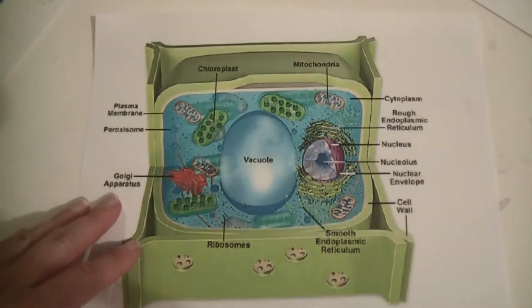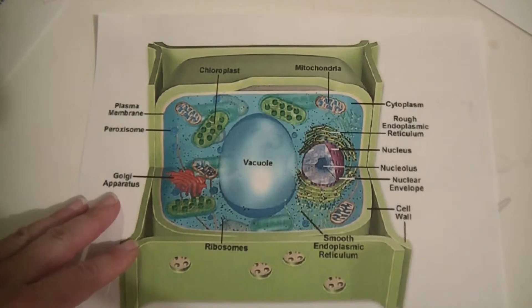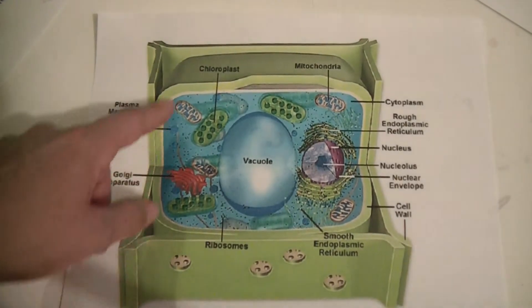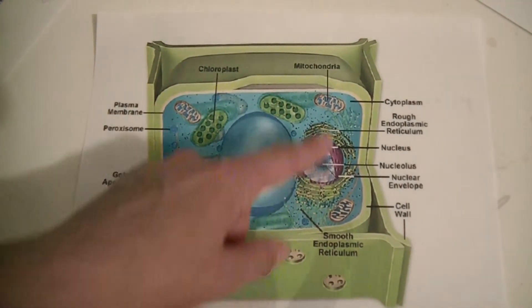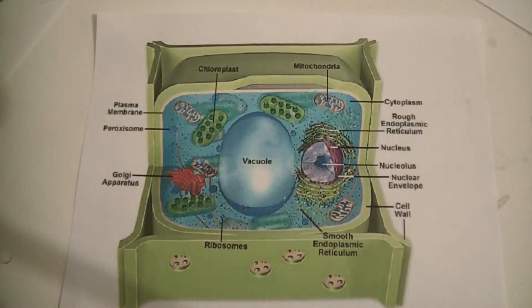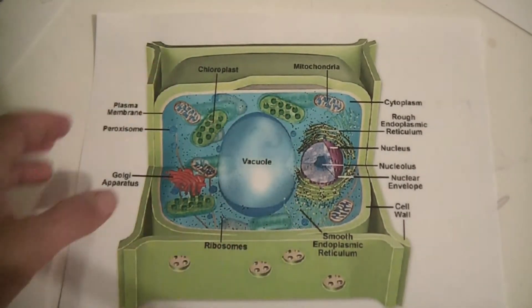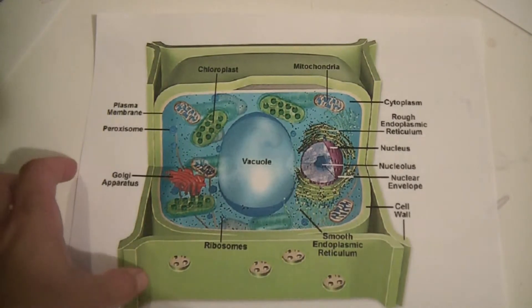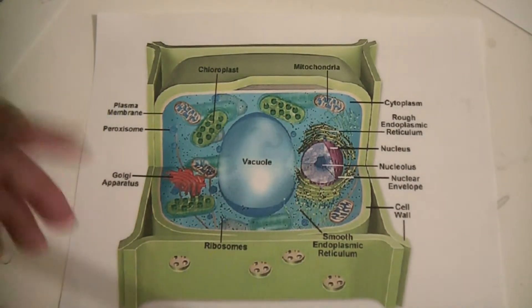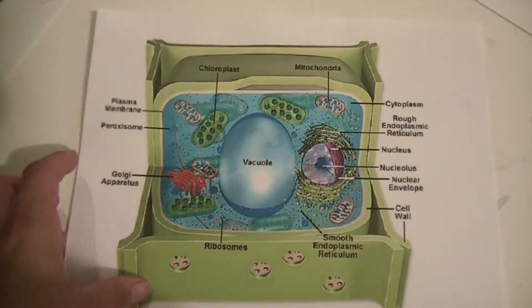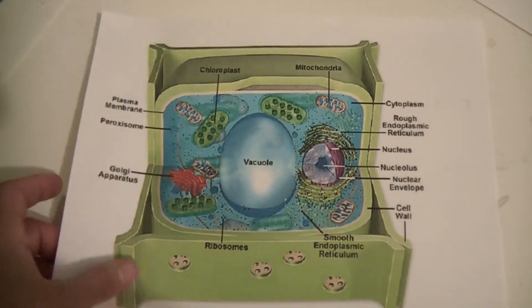As we travel through — looking back at our main diagram — we have our cytoplasm. The cytoplasm is the fluid structure that basically fills the entire inside of the cell and holds the rest of the organelles that we're going to talk about.